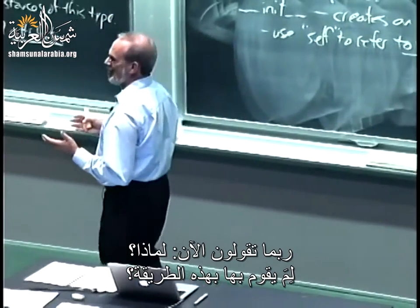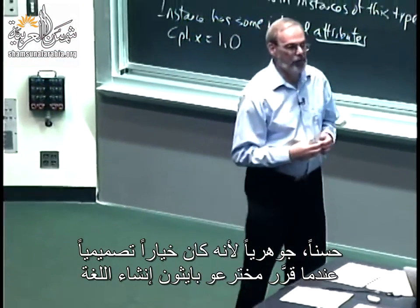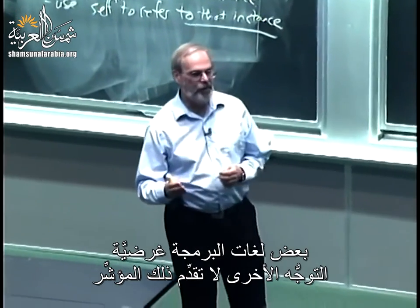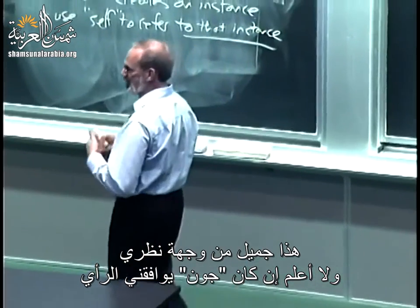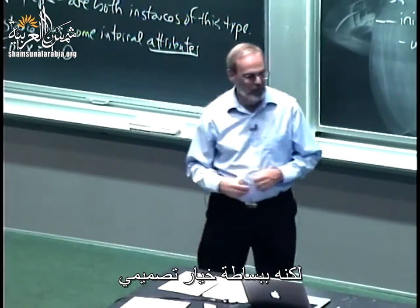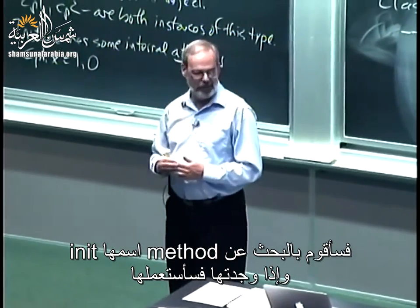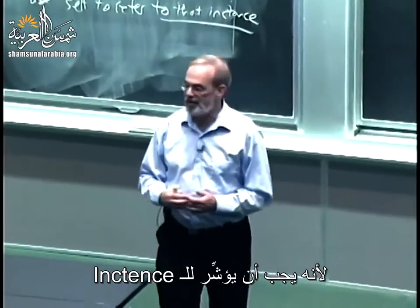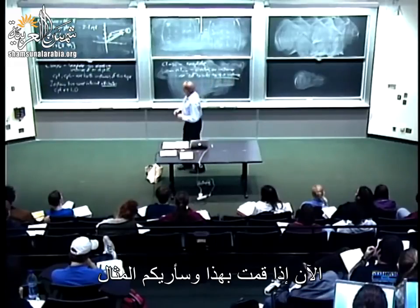The idea is that self always points to the particular instance. This is a design choice in Python — we always have an explicit pointer to the instance. Some other object-oriented languages don't provide that pointer explicitly. By convention, the first argument is always self because it must point to the instance, and then you pass in any additional arguments.